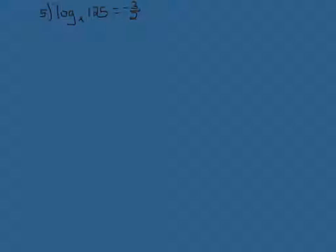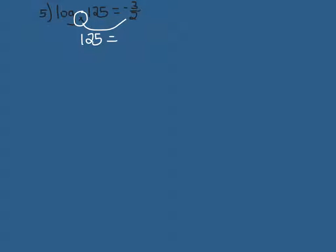Let's take a look at number five. Number five is in log form, so we circle the base and run the race to put it into exponential form. The base is no longer holding up the word log, so we drop down 125. The x becomes the base on the other side of the equation, which means negative three halves becomes our exponent.